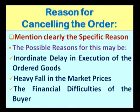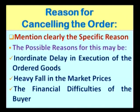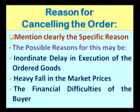When we write a letter for cancelling an order, like previous letters, we have to clearly mention the specific reason why we are cancelling the order — what factors compel us to cancel. One reason may be inordinate delay in execution of the ordered goods. For example, if you ordered goods to be received before 10th March but now it is 20th March and you have sent two reminders with no communication from the supplier, in such a case you may cancel the order.